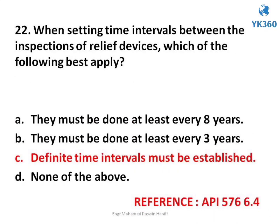Question number 22. When setting time intervals between the inspections of relief devices, which of the following best applies? Options are: A. They must be done at least every eight years, B. They must be done at least every three years, C. Definite time intervals must be established, D. None of the above. Answer is option C. Definite time intervals must be established.